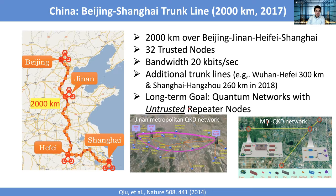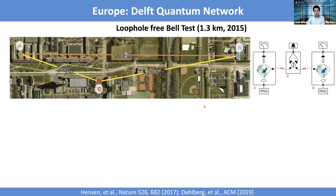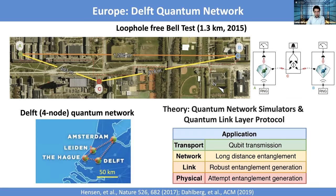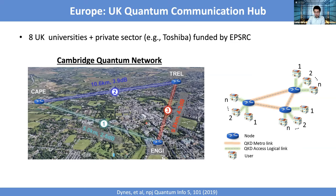This will likely happen in the next few years, with multiple countries working on it. In the Netherlands, there is the Delft quantum network, where they verified violations of local realism over a few kilometers and are trying to expand to multiple locations. In the UK, there are networks connecting nodes in Cambridge. In the United States, in Chicago, there is the Chicago Quantum Loop to demonstrate quantum network protocols.